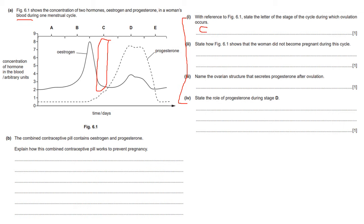The next question asks: state how figure 6.1 shows that the woman did not become pregnant during this cycle. The role of progesterone is to maintain the endometrium — the uterine lining — in preparation for a fertilized egg. If there is no fertilization, progesterone will then decrease. So the answer here is: progesterone decreases at E.